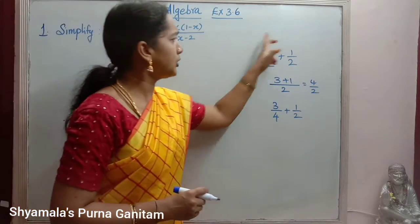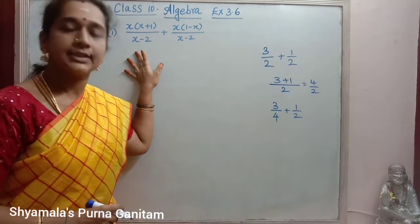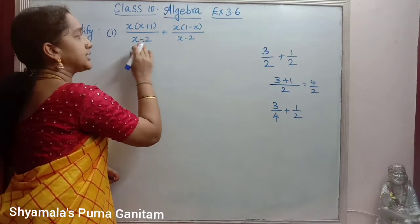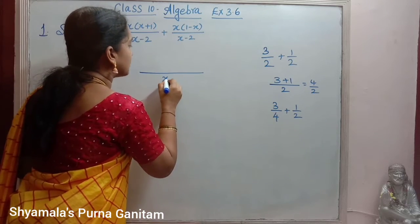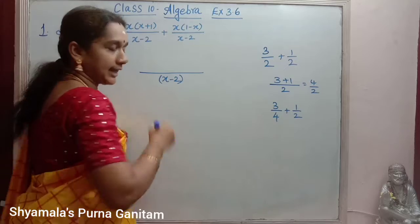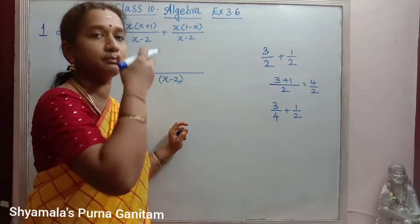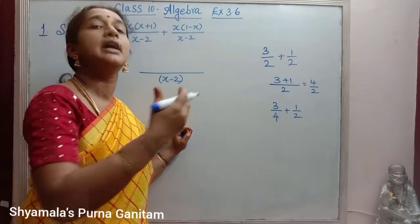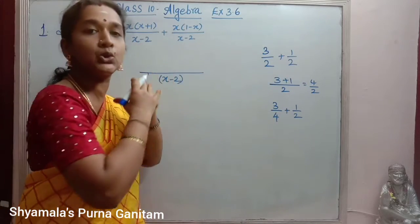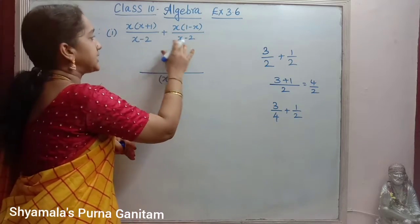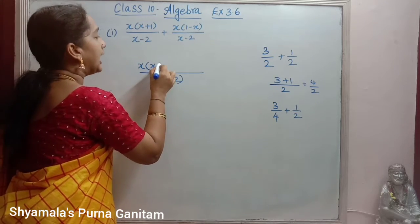In the first sum, these are like fractions — the same procedure we are going to follow. Since x minus 2 is the common denominator for both terms given, we take that as x minus 2 in common. Since we are having an addition symbol, we write the denominator as it is and add the numerators as they are.